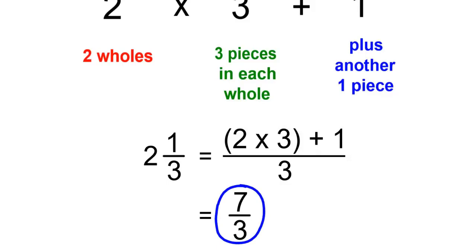So 2 and 1 over 3 as a mixed number is equal to 7 over 3 as an improper fraction.